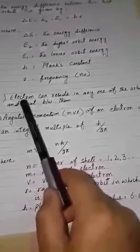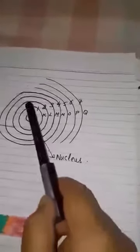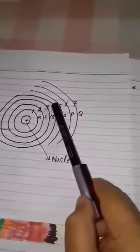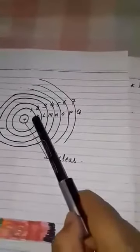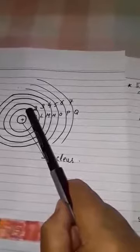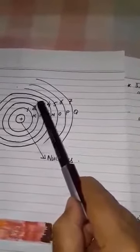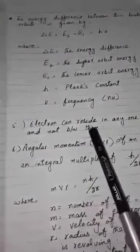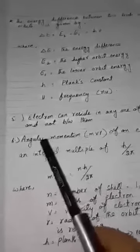And that is electrons can reside in any one of the orbits and not between them. Let's see this picture. Say this is orbit number one, orbit number two, third, fourth. So electrons may reside in first orbit, second orbit, third, but not in between them. This is the fifth assumption of Bohr.